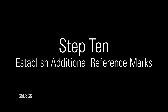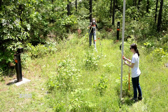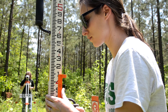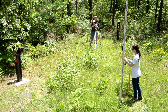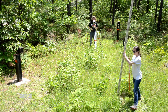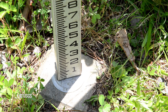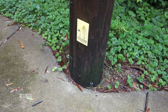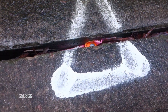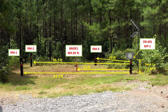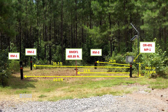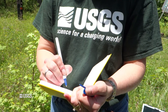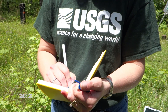Step 10: Establish additional reference marks. A reference mark is a nearby datum established by a permanent marker that is used to periodically check the measuring point and/or land surface datum, or to re-establish them should the original be destroyed or changed. Establish at least one clearly marked reference mark near the well, such as a benchmark, a lag bolt set in a telephone pole, a spike in a mature tree, a mark on a permanent structure, or a poured concrete post. More than one reference mark is preferable. Locate a reference mark a distance away from the well to assure that circumstances that damage the well do not also damage the reference mark. Take photographs and record a description of the site reference marks in the field notebook.